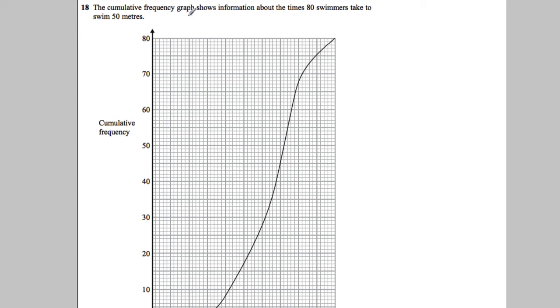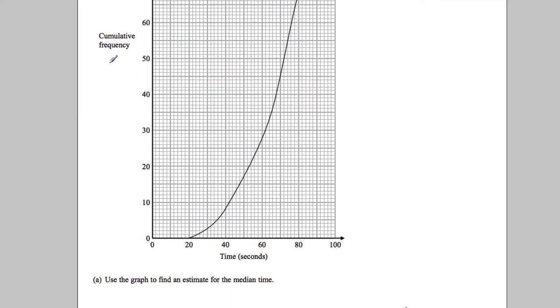Okay, question 18. The cumulative frequency graph shows the times 80 swimmers take to swim 50 meters. Okay, so we look at it.